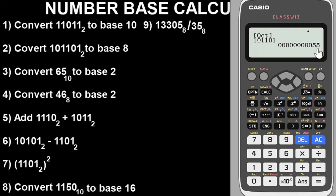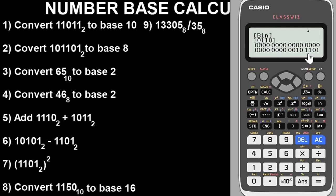The value is 55 in base eight. So that is the conversion of that binary value to base eight: it is 55 octal. If you want to change it back, simply press the Binary button to return to binary format. To go back to base eight, press the OCT button. Very simple. Now question three says convert 65 base 10 to base two.